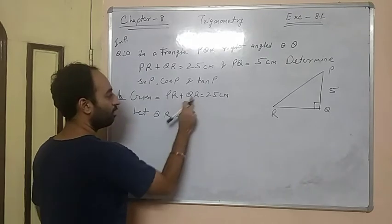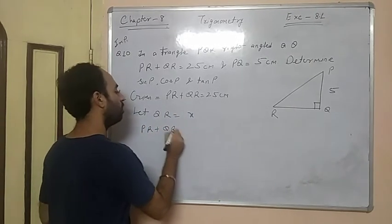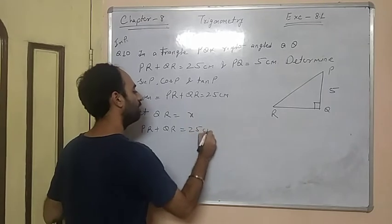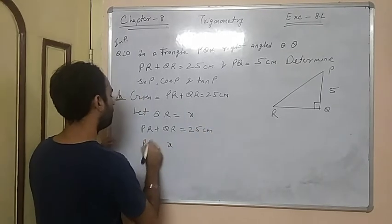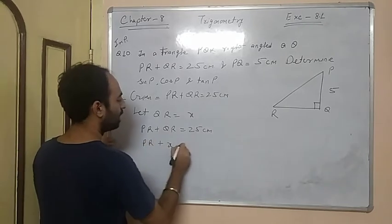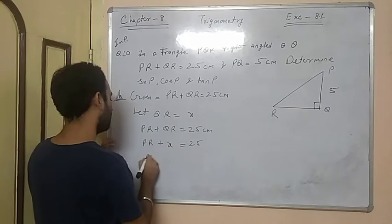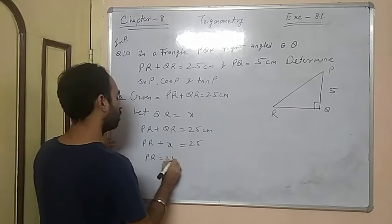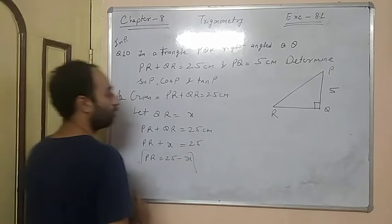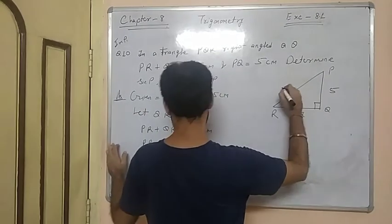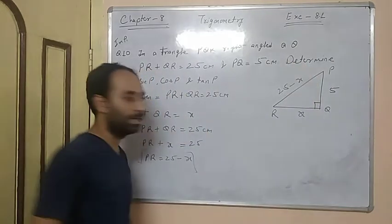So PR plus QR equals 25 cm. Let QR equal x. Then PR plus x equals 25 cm, so PR equals 25 minus x. Here QR is x and PR is 25 minus x.